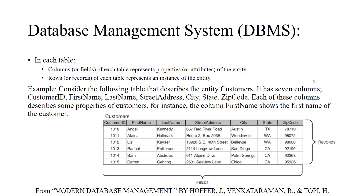Some columns are optional — we will talk more about data types later. Each table has rows and columns. Columns represent attributes or properties — for example, a customer has a first name, which is one attribute or property, and a last name, which is another attribute. Rows or records are samples of the entities. So each table is made of records and fields.